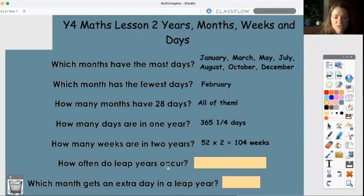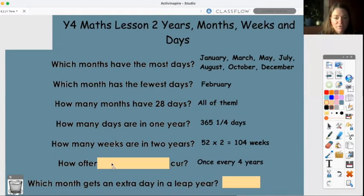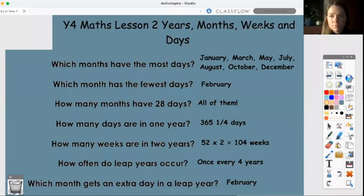How often do leap years occur? Well, as we said, quarter day each year. So when we get those four quarters, our numerator and denominator are equal. So it gives us that whole day. So they occur every four years, once every four years. Maybe have a look at when our next one is going to be. They are always on an even numbered year. I think it may be 2024. And which month gets an extra day in the leap year? Well, we give that one to February.